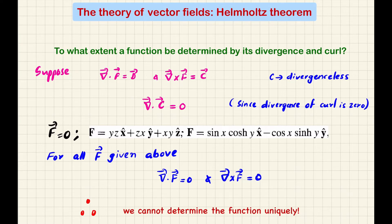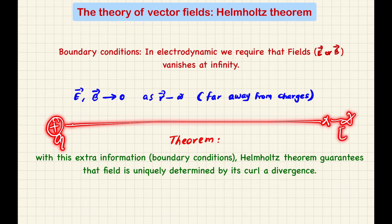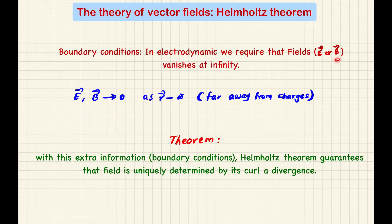That extra condition is given by Helmholtz's theorem. In electrodynamics, we look at the boundary conditions — given a physical situation, how the field behaves at infinity. The electric field due to a source charge at a very far away point is zero. Similarly, a constant current produces a magnetic field, but at infinite distance the magnetic field is also zero.